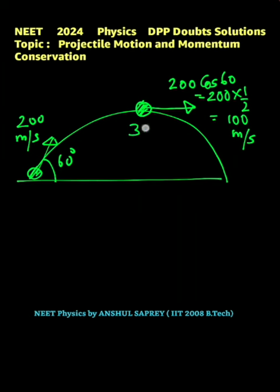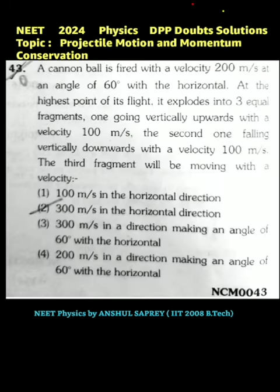Suppose the mass of the ball is 3m. According to the question, after explosion, one fragment is going vertically up with 100 meters per second, the second one is falling vertically down with 100 meters per second, and we have to find the velocity of the third fragment.